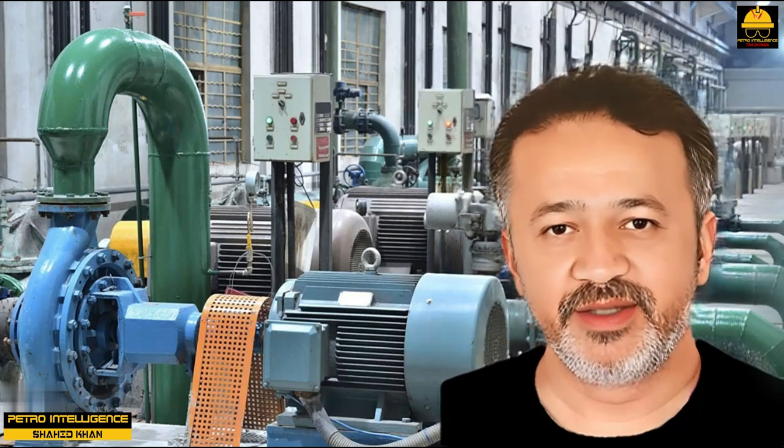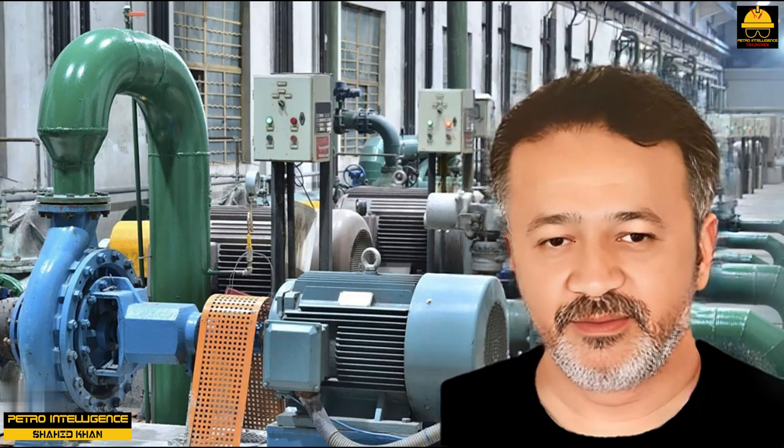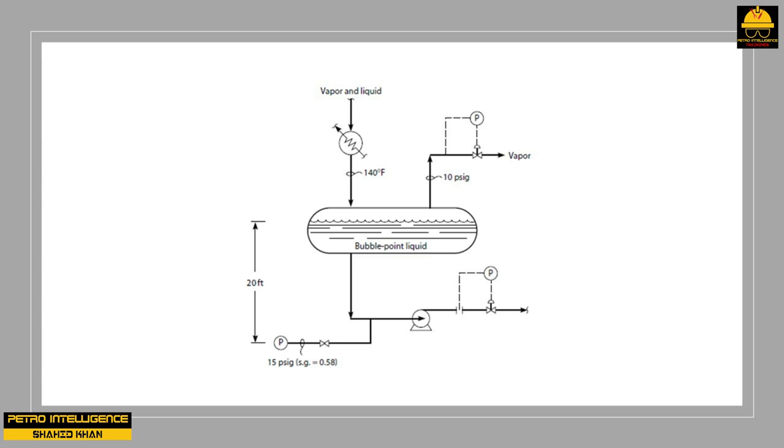The kinetic energy of the liquid increases by a factor of 264, that is, 16 squared. This large increase in kinetic energy comes from the pressure, or feet of head, of the liquid itself. The conversion of the pump's suction pressure to velocity in the eye of the impeller is called the required net positive suction head, NPSH.